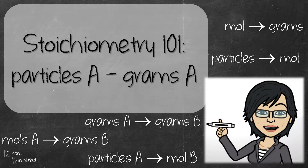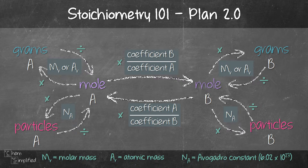This is part 5 of the stoichiometry 101 series. In this video, we're going to look at converting number of particles to grams. Here's the stoichiometry plan we'll be using. I've explained it in parts 1 and 2 of this series, so do check them out if you haven't seen them. I'll place a link on the top and in the description box below.